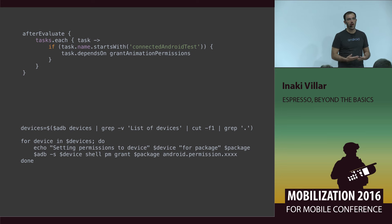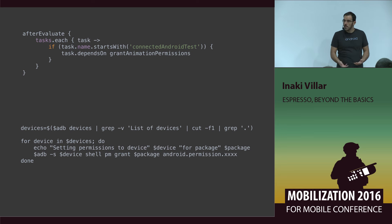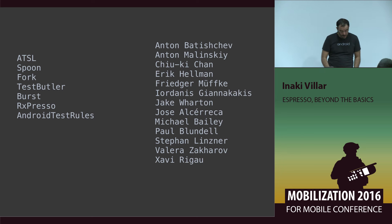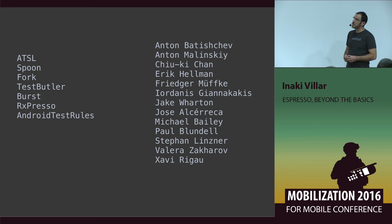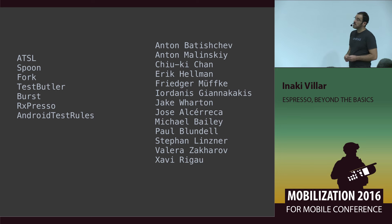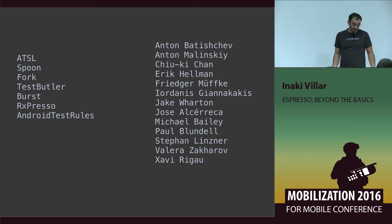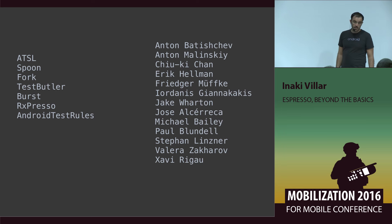If you are testing what happens when a user accepts or denies a permission — yes, you can test that. But if you are testing something like the full payment process, which is not related to permissions, just grant them all. This talk is inspired by our work at Agoda. Cool libraries we've used include: ATCL, Spoon, Fork — a cool library to check out — Test Butler from LinkedIn which is new and very interesting, Burst, AdEspresso, and Android Test Rules.